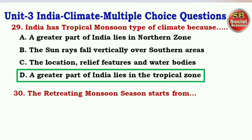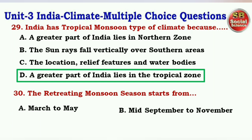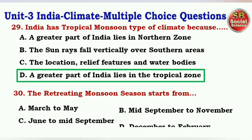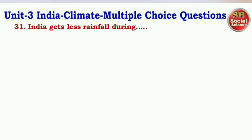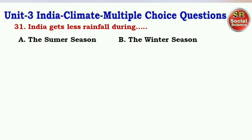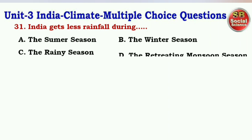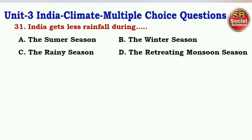Next question: The retreating monsoon season starts from — options are March to May, mid-September to November, June to mid-September, December to February. The right answer is option B — mid-September to November. Next question: India gets less rainfall during — options are the summer season, the winter season, the rainy season, the retreating monsoon season. The right answer is option B — the winter season.